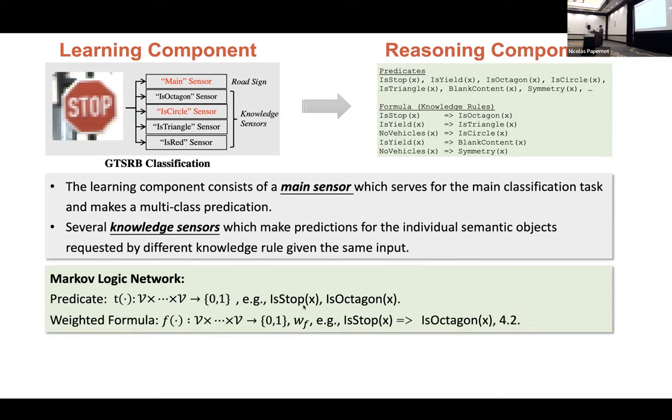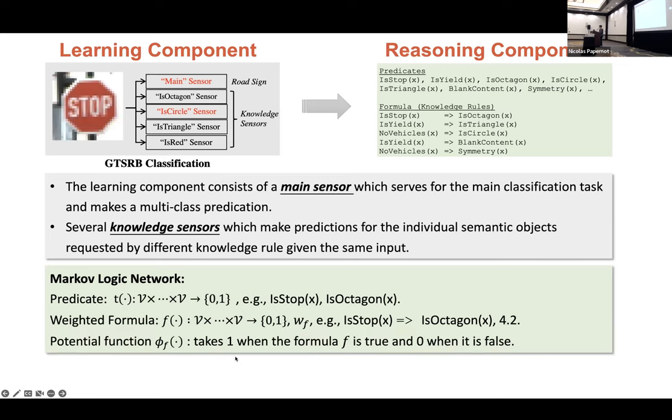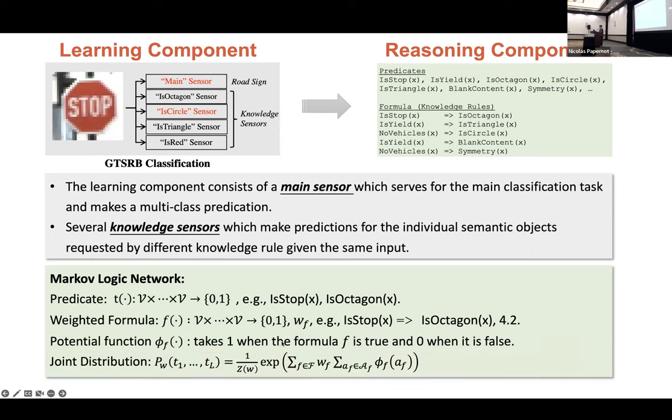And then we can define a weighted formula, which you can treat it as a composition of several predicates. For example, we can define IsStop(x) implies IsOctagon(x). This is just one standard formula. And it will return one if the formula is true. It will return zero if the formula is false. And we also have a weight for this formula, like the 4.2 here, which can represent the confidence of the formula in some sense. And then we define a potential function φ, which takes one when the formula is true and zero when it is false. So finally, we will get a joint distribution of all the predicates. And then we can make our inference based on some marginal distribution of this function.